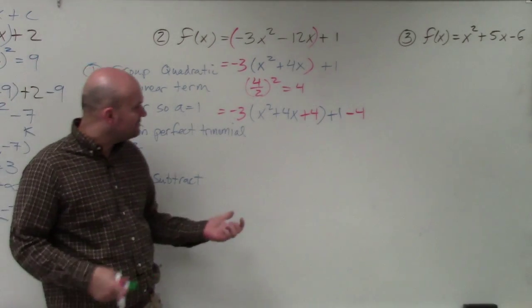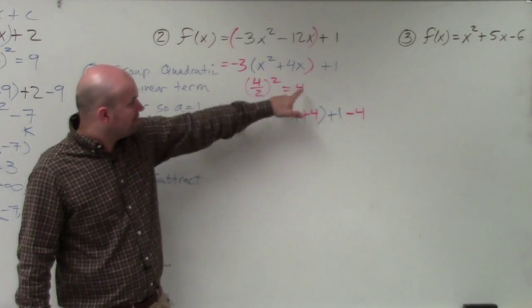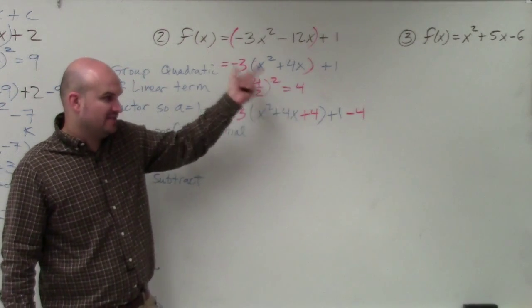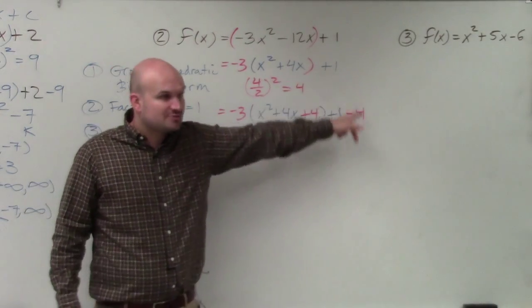So we have x squared plus 4x plus 1 or plus 4. Does everybody see where I got the 4, right? b divided by 2 squared equals 4. You add it inside. You subtract it outside.